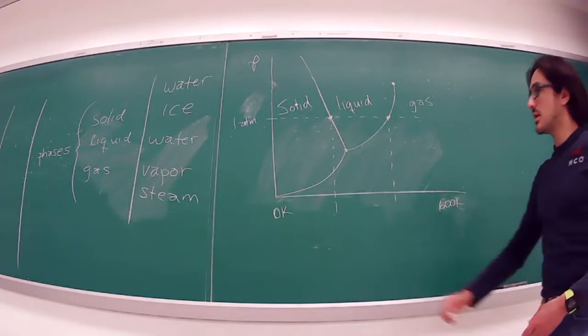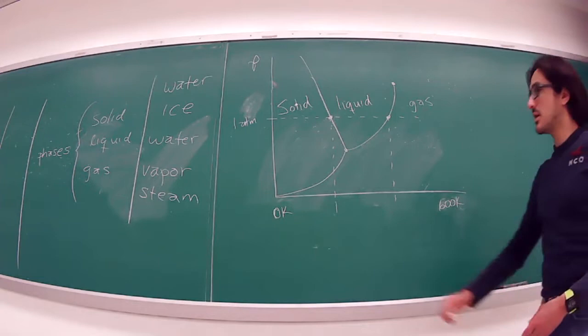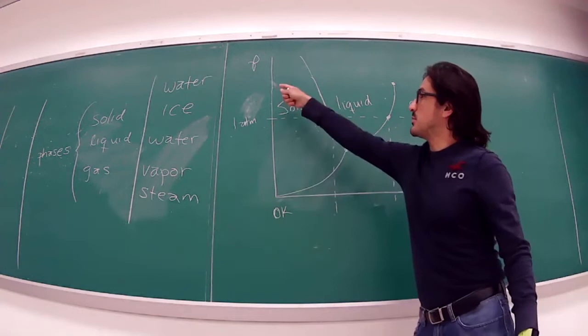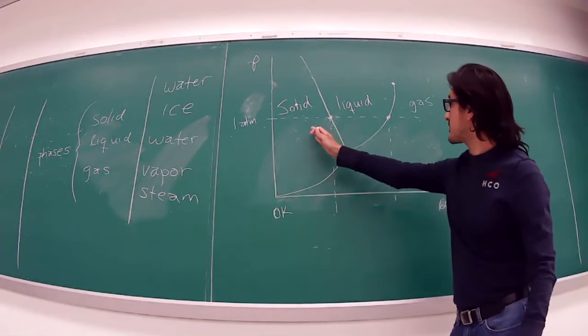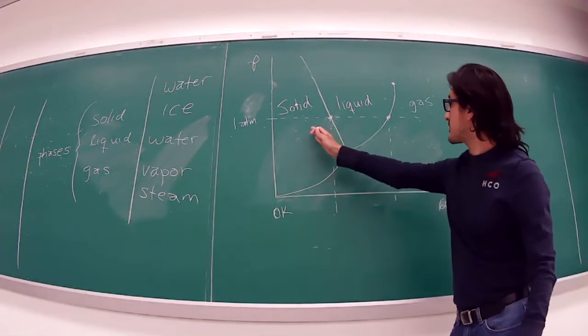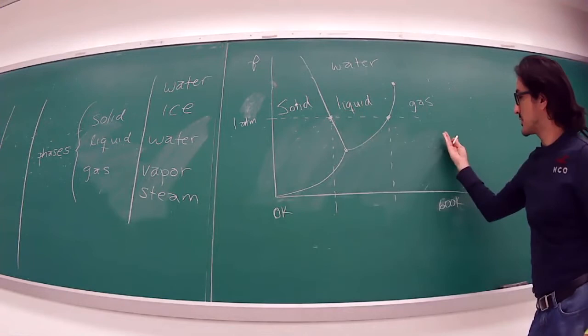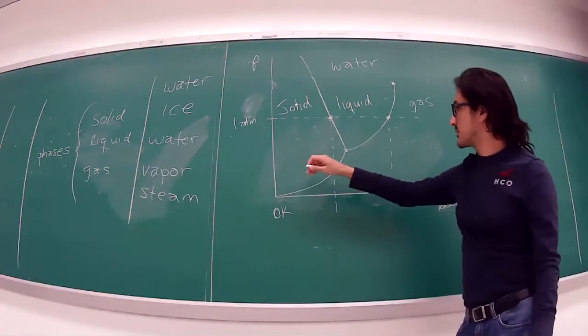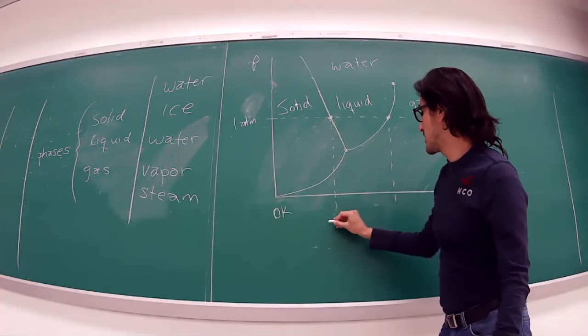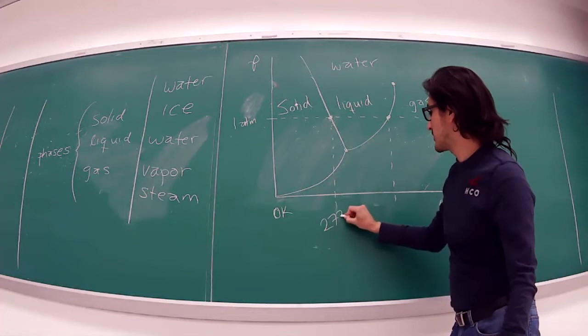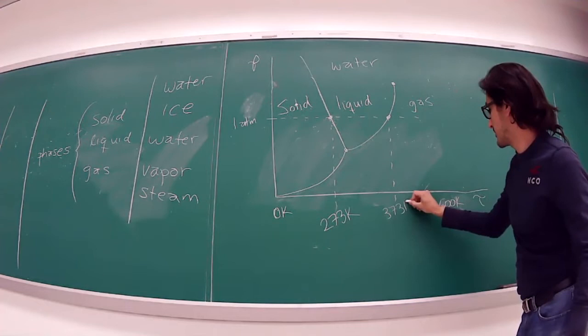This is our phase diagram — pressure versus temperature. In the low temperature part we have the solid, which happens in pretty much every material. In between, we have the liquid phase. Continuing to increase the temperature, we reach the gas phase. At one atmosphere, the solid-to-liquid transition occurs at zero Celsius (273 K), and the liquid-to-gas transition at 100 Celsius (373 K).